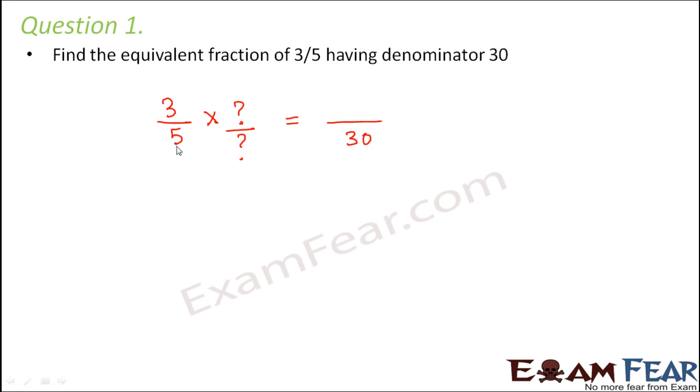So now just think what is that number which when divided by 5 gives 30? 6, right? So we will multiply the numerator and the denominator by 6. That's because we need to multiply both numerator and denominator by the same number. So if denominator is multiplied by 6, so the numerator also must be multiplied by 6. So this would be 18 divided by 30. So 18 by 30 is the equivalent fraction.